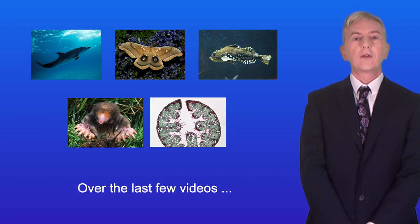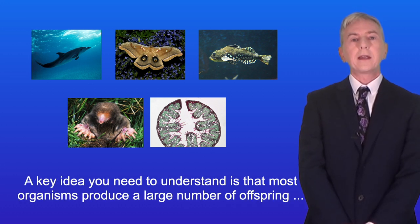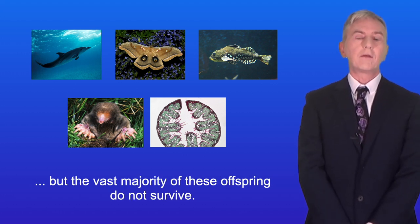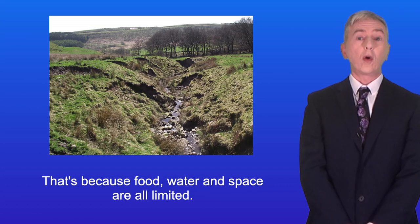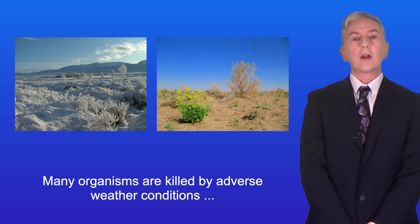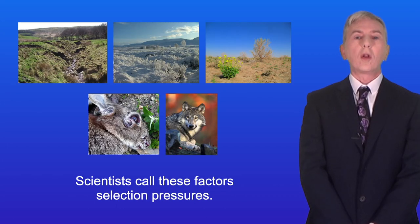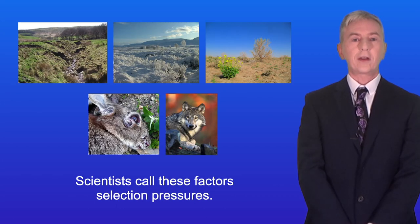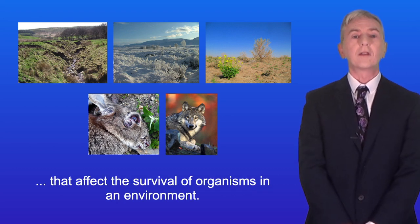Over the last few videos, we've seen how organisms are adapted to their environment. A key idea you need to understand is that most organisms produce a large number of offspring, but the vast majority of these offspring do not survive. That's because food, water and space are all limited. Many organisms are killed by predators or by infectious diseases, and many are killed by adverse weather conditions such as extreme cold or heat. Scientists call these factors selection pressures.